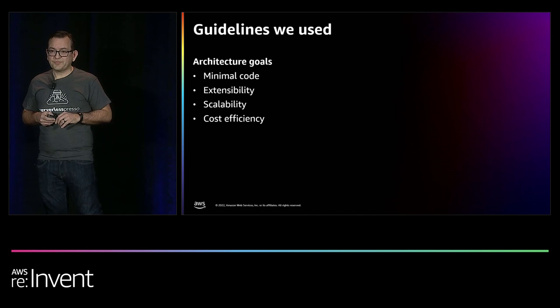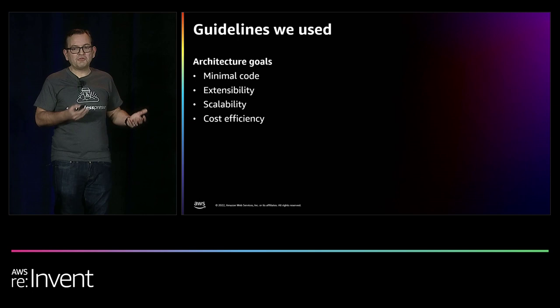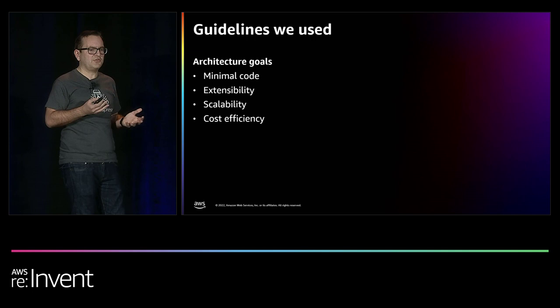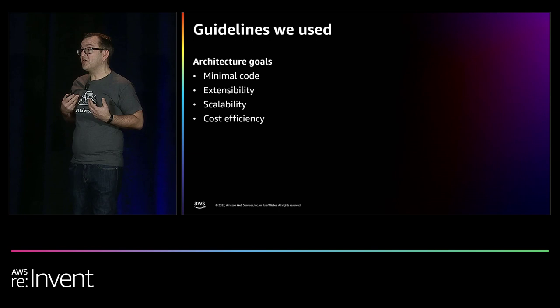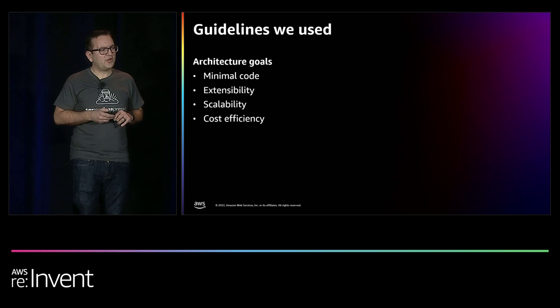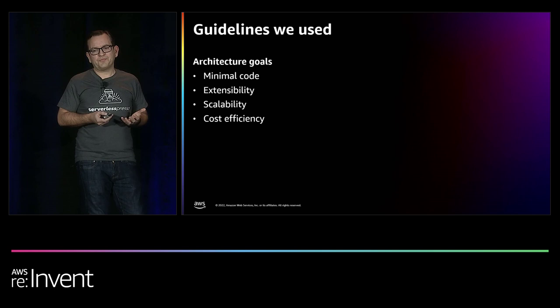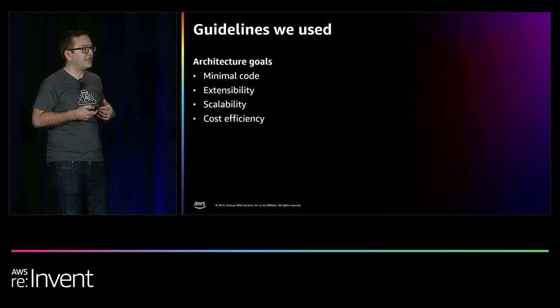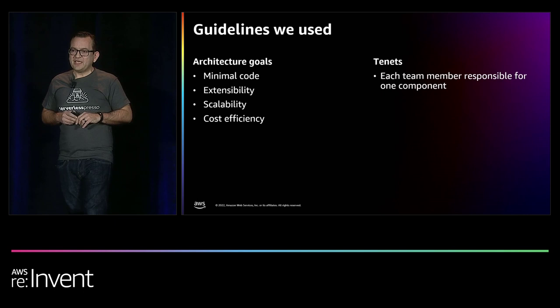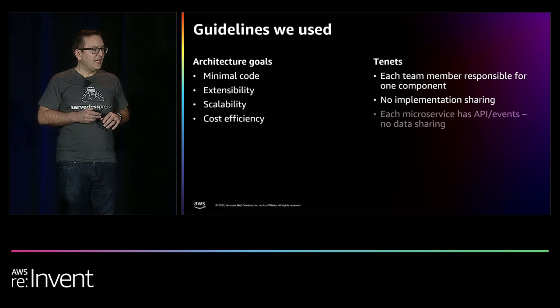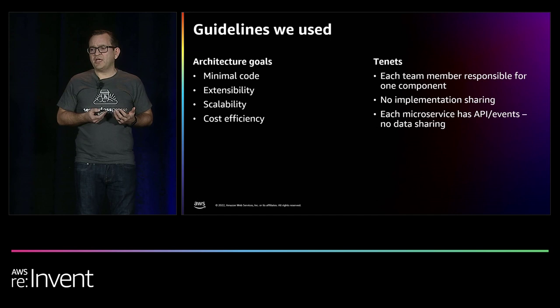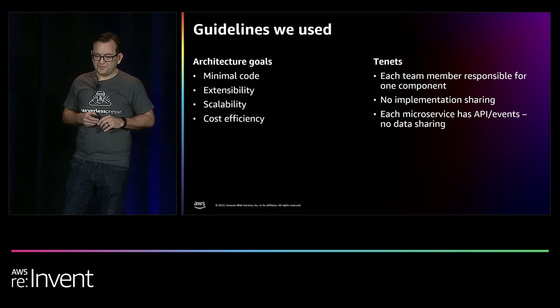Scalability was also important. I didn't know if we'd sell 10, 100, or 1,000 drinks. As it turned out, we had five events in one day this year, doing 5,000 drinks in one day. And perhaps most importantly, I needed something cost-efficient — I wanted to build something where I could say this is the most cost-effective way of building this app. We also had tenets: each team member was responsible for one component, with no implementation sharing. Each component had to have an API or communicate by publishing or consuming events — you couldn't go poking into other people's DynamoDB tables.